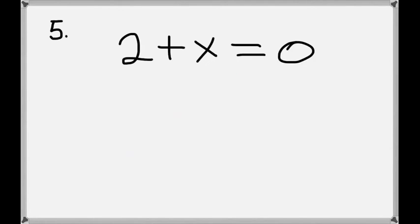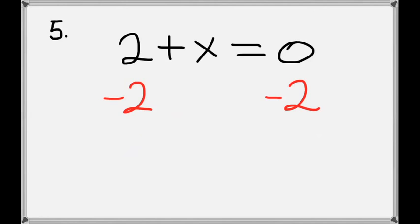For our final problem we have 2 plus x equals 0. We want to get x by itself on the left hand side, so we'll subtract 2 from the left hand side. Then we have to subtract 2 also from the right hand side to keep the equation balanced.